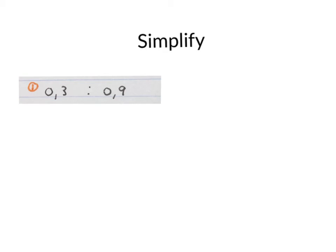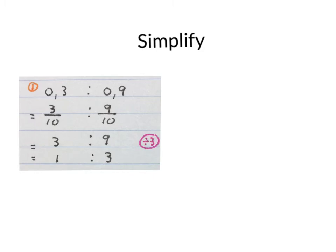The next ratio is 0.3 to 0.9. One way of doing it is to convert them both to common fractions, 3 tenths to 9 tenths. That gives us 3 to 9. The highest common factor of 3 and 9 is 3, so I divide 3 into both of them. The simplified answer is 1 to 3.